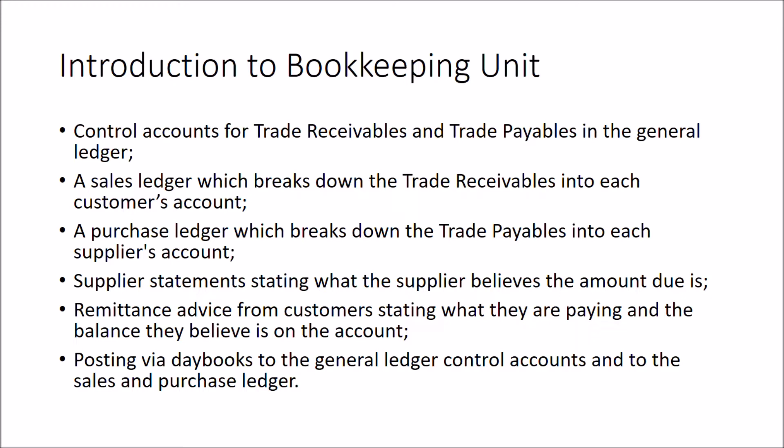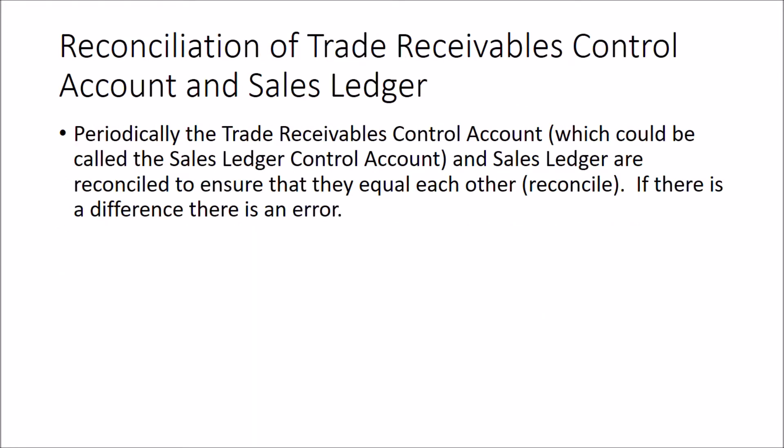In this chapter we're going to reconcile the trade receivables control account to the sales ledger and the trade payables control account to the purchase ledger. The control account should always reconcile to its appropriate ledger. If not, there's an error in the accounting system requiring correction. An advantage of a digital system is that the sales and purchase ledgers will always reconcile to their respective control accounts, because the computer won't make transposition errors - though postings might still be wrong.